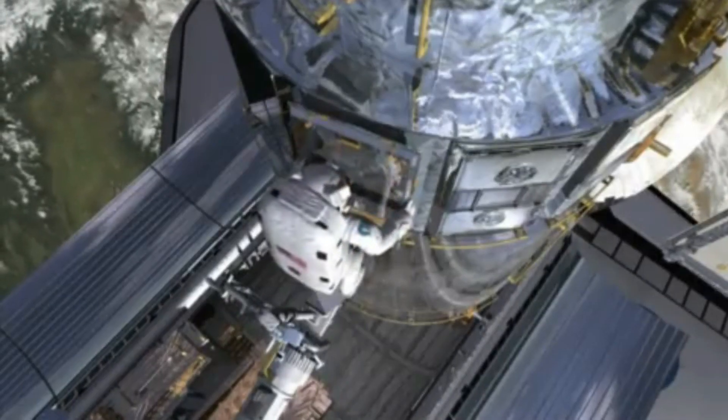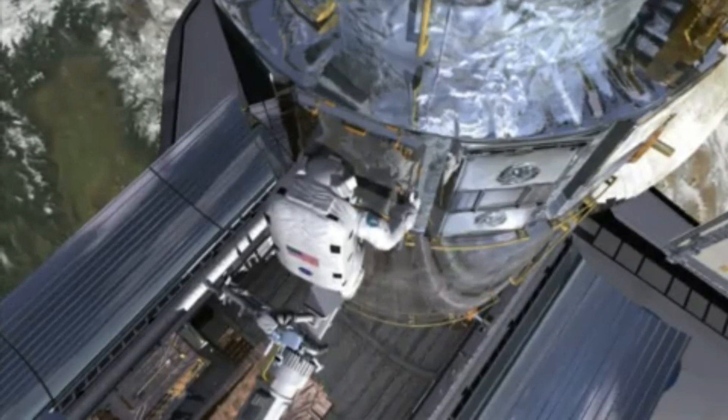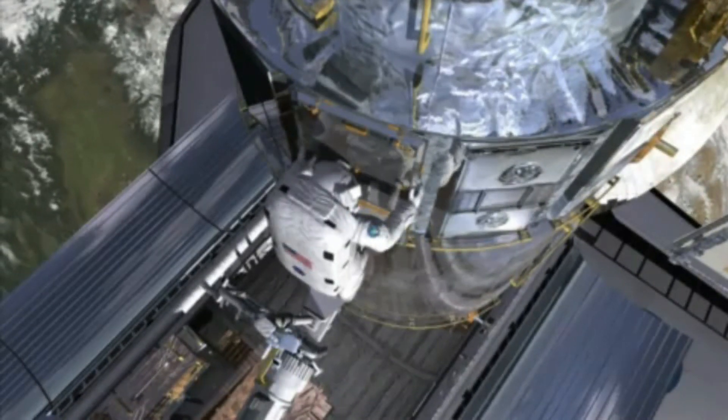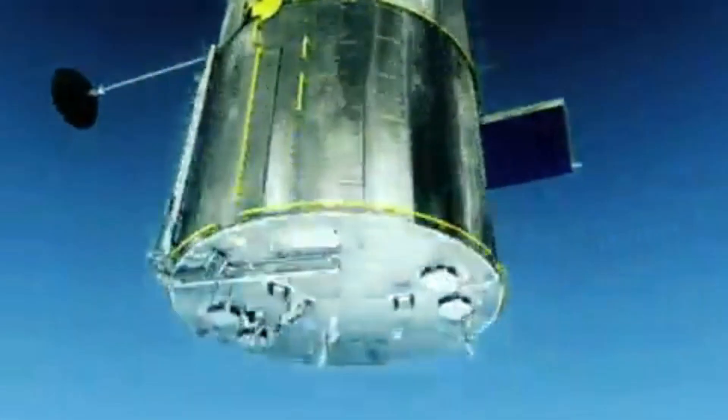Another problem is the limitation of our instruments. To get the best view, a telescope needs to have a large aperture, the diameter of the main mirror or lens, and be located above the atmosphere to avoid distortion from Earth's air.